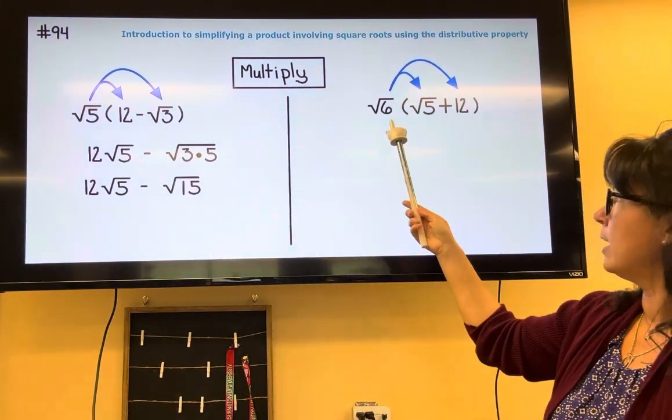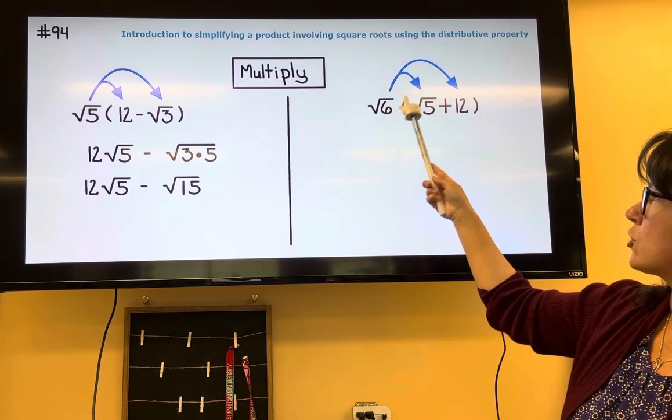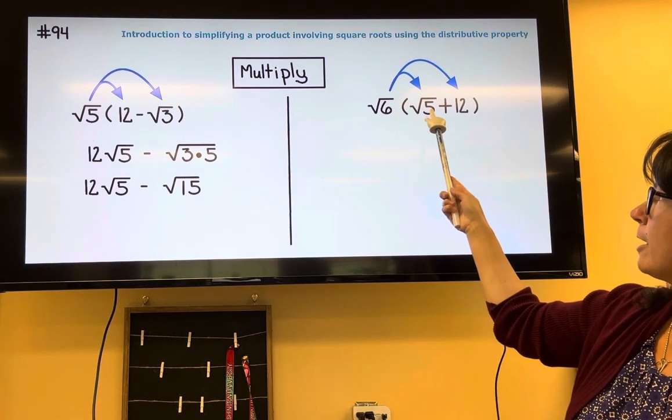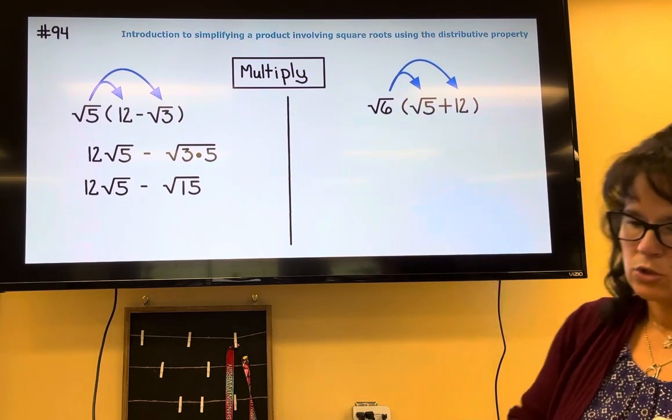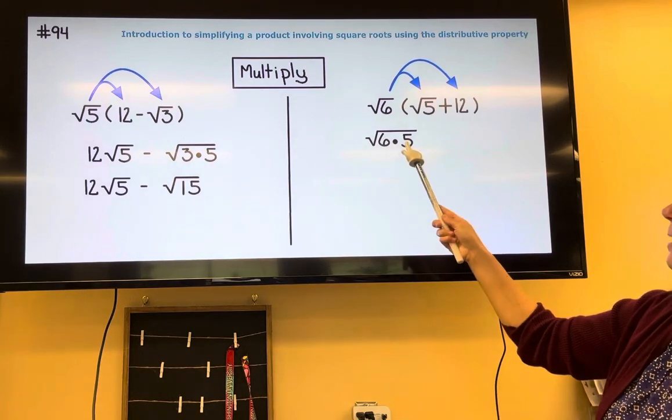So here's another one. When I multiply the square root of 6 times the square root of 5, distributing that through, we can multiply the radicands together. So we're gonna have the square root of 6 multiplied by 5.